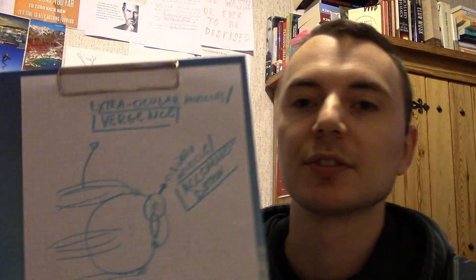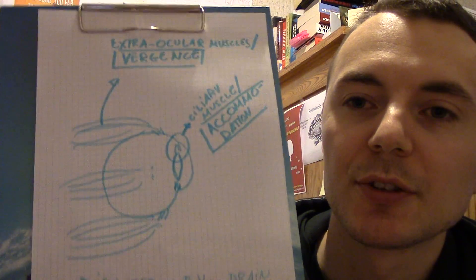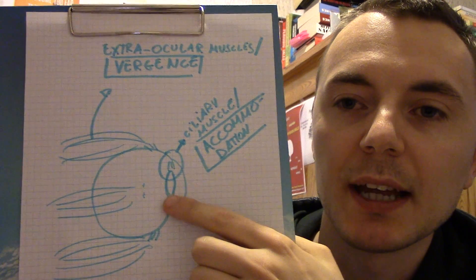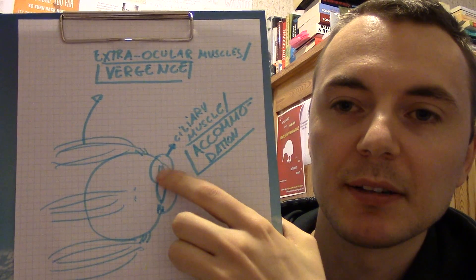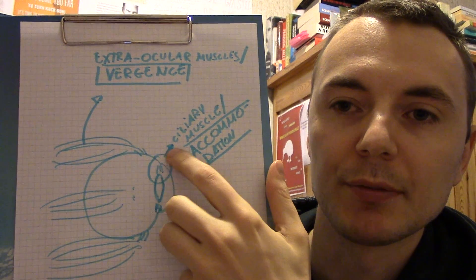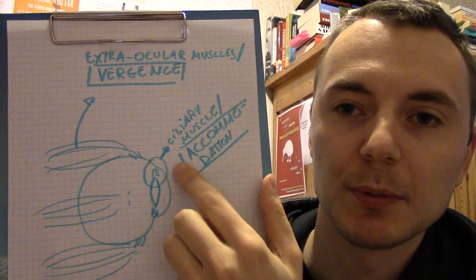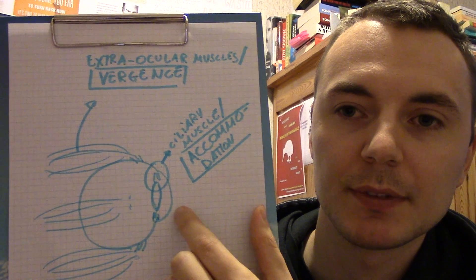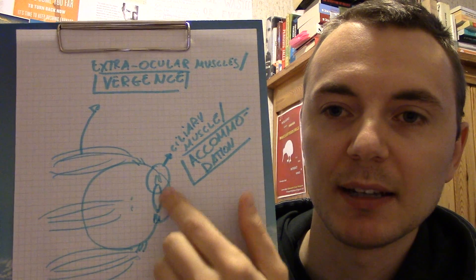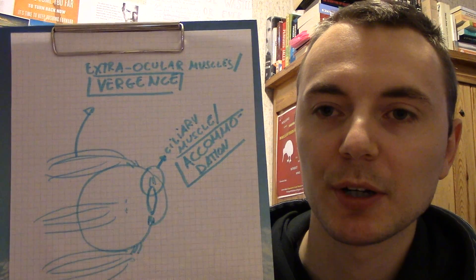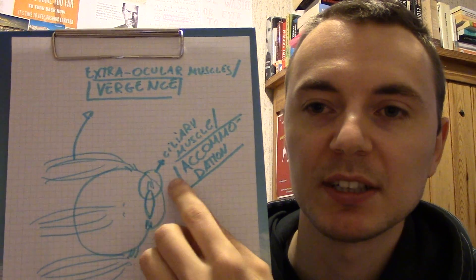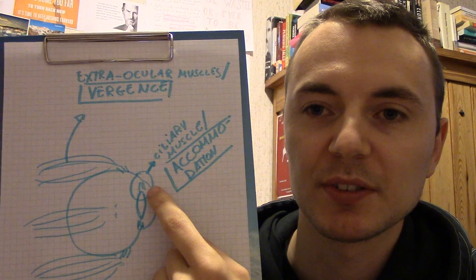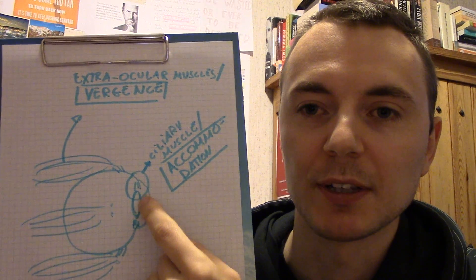So just very short, what is accommodation and what is vergence. I still have my chart from yesterday, so this is my version of an eyeball and here's the lens in the eyeball and here are the ciliary muscles that attach the lens to the eye. And then you have the outer film of the eye, which is the cornea, and that also plays a role in astigmatism but I'm not going to go into astigmatism right now.